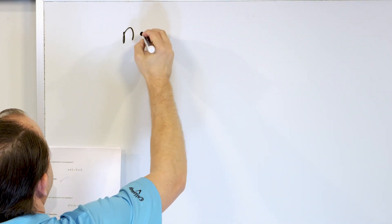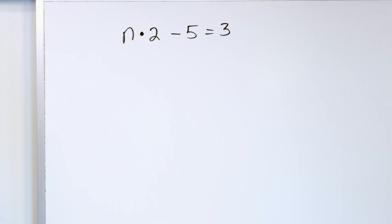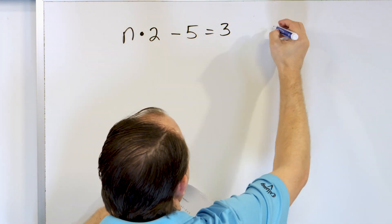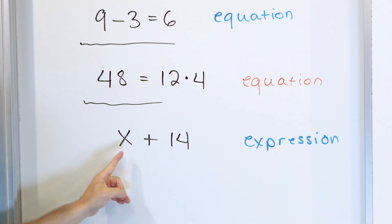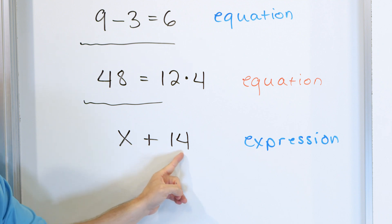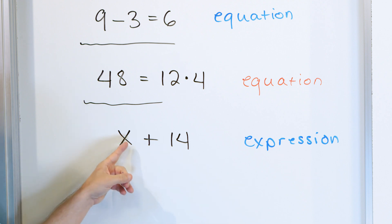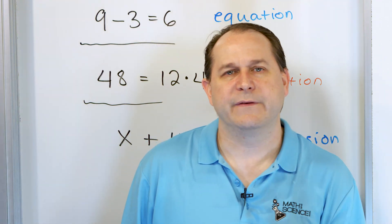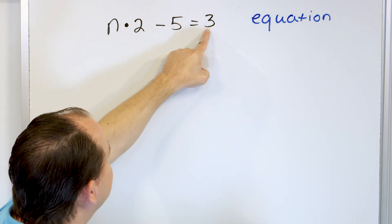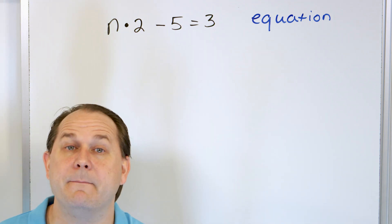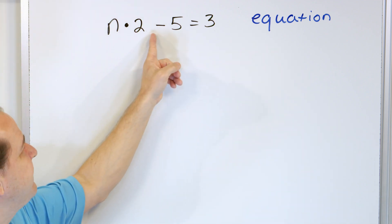Let's talk about n multiplied by 2 minus 5 equals 3. Is this an equation or is this an expression? You can see there's an equal sign, so immediately, without doing anything else, you know it has to be an equation. Now, whereas before the variable can take on any value, here I have a variable and it's equal to something else. So because it's equal to something else, there's actually only one value that works for this variable to make it equal. There really is only one value of the letter n that can work in order to make the left-hand side equal 3.